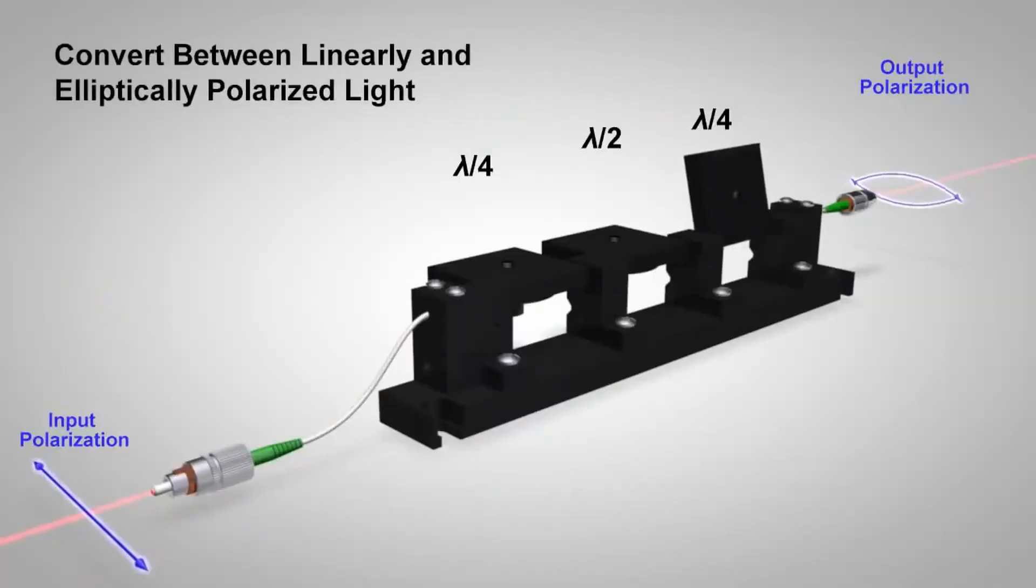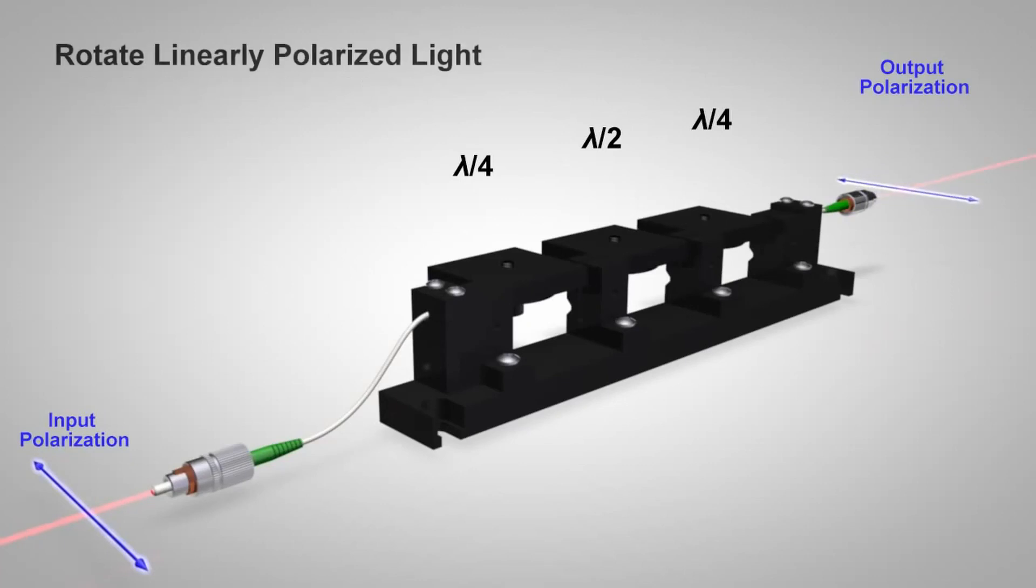Manual polarisation controllers attempt to exploit the use of stress-induced birefringence. A popular type of polarisation controller induces stress by using coils of fibre in a sequence. By adjusting the orientation of these three coils, the cable twists and one can transform an input state into any output state polarisation.